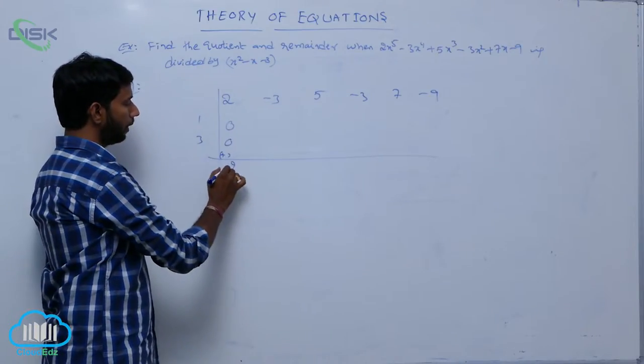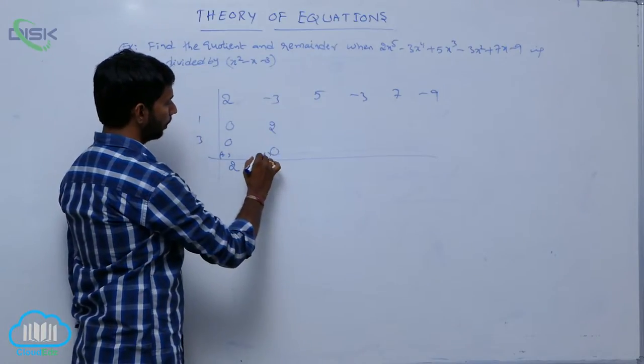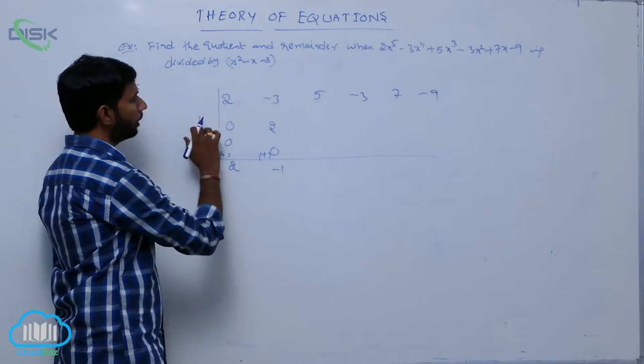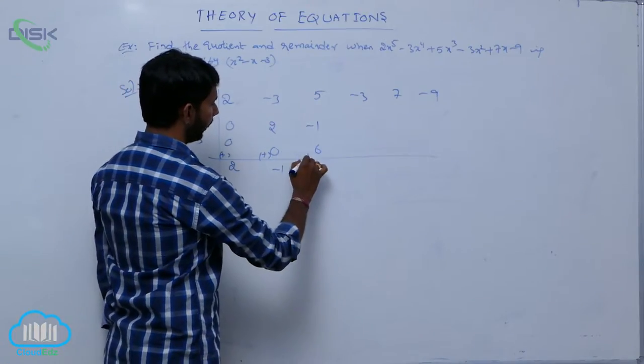Adding all these, we get the value is 2. 2 into 1 is equal to 2 plus 0, is equal to minus 1. Here minus 1 into 1, minus 1. 2 into 3, 6. That is equal to 10.